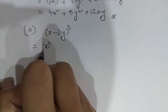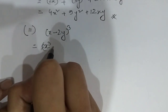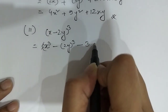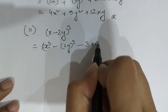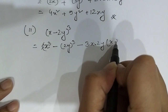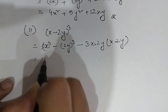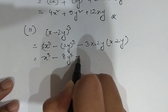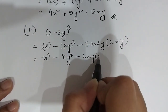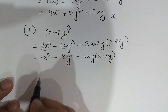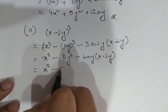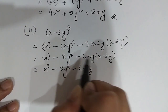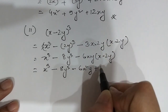x squared minus 2y whole squared minus 3ab. x minus 2y whole into x minus 2y. x cubed minus 8y cubed minus 6xy into x minus 2y. x cubed minus 8y cubed minus 6x squared y, and so on.